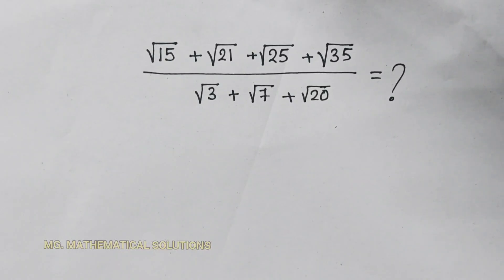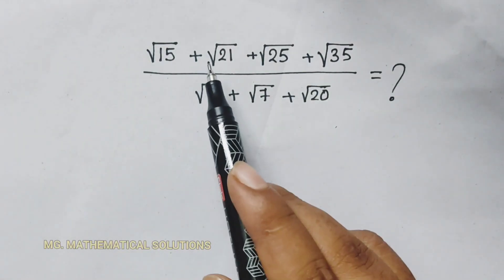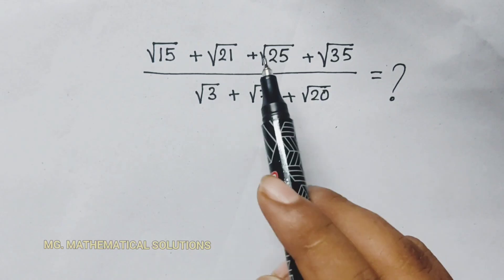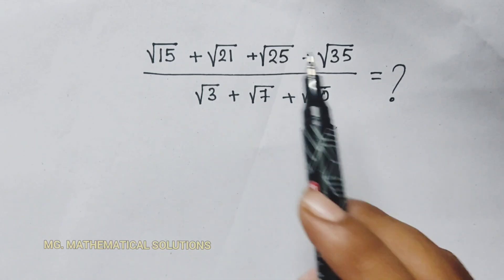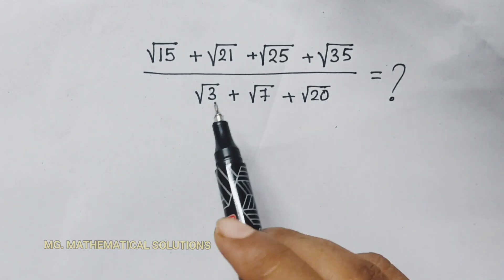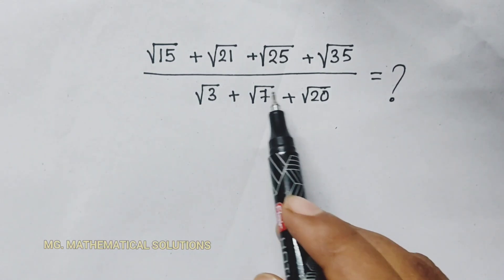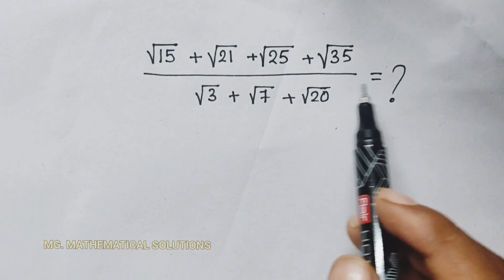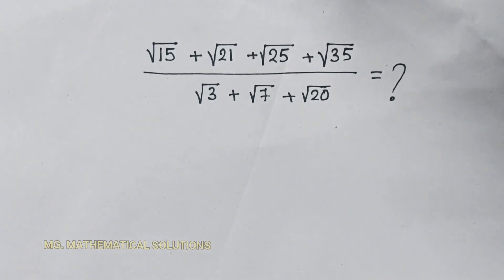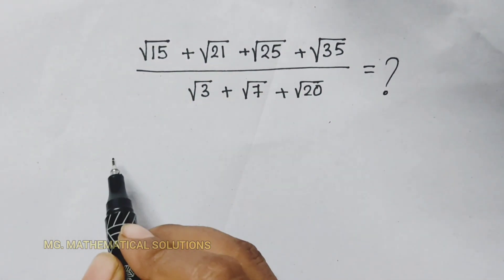Hello students, today I solve a nice square root problem: root of 15 plus root of 21 plus root of 25 plus root of 35, all divided by root 3 plus root 7 plus root 20. What does this equal? Let's solve it.